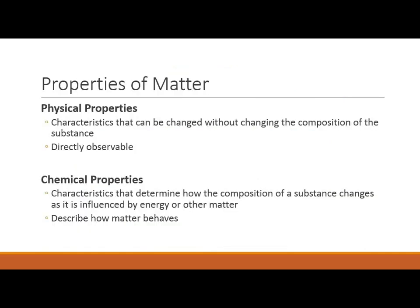Now that we know how to classify matter, let's talk about some of the properties of matter — its characteristics. There are two different types: physical and chemical properties. Physical properties are easy — these are the things you can directly observe: color, taste, smell, mass, weight, size, shape, and so forth. These are things you can directly observe and measure without actually changing the nature of the substance itself. If I look at the color of a marker, it doesn't suddenly change anything about the marker — I just see what color it is.